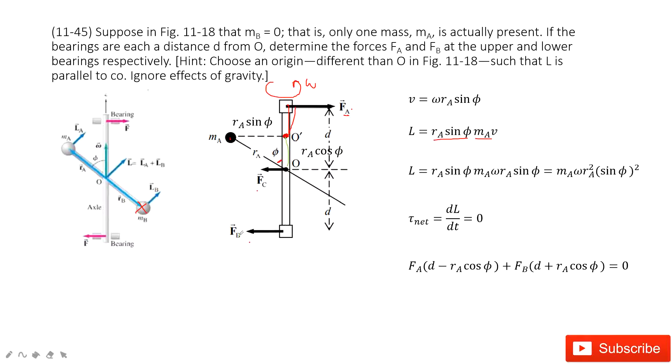And for B, it should be d plus this side, d plus rA cos φ. So the first equation we are getting.